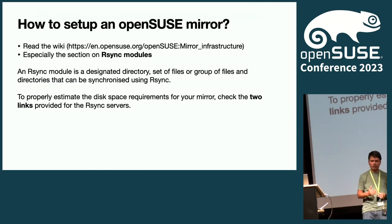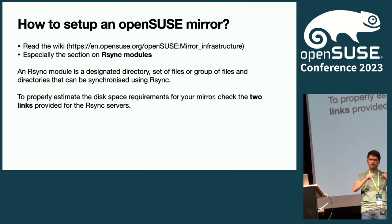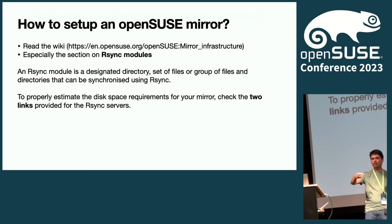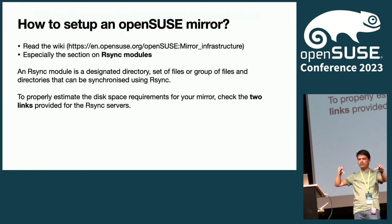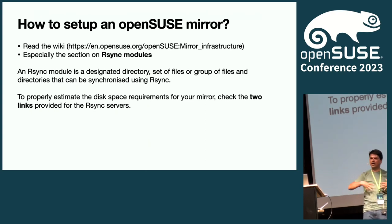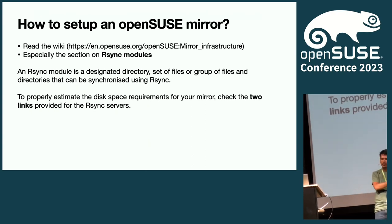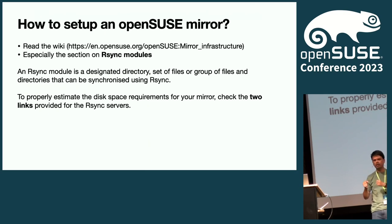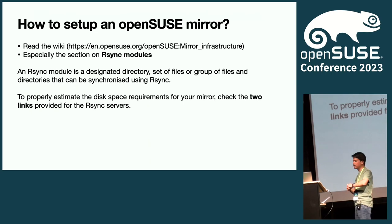With an rsync module, when I'm synchronizing something, I can specify directories and files that are on different locations without needing to know the exact paths. As a mirror admin in Mauritius, I do not need to know the exact location of those files. I'm synchronizing from a server in Germany using a module, and files on different data centers with shared storage — the module takes care of that.